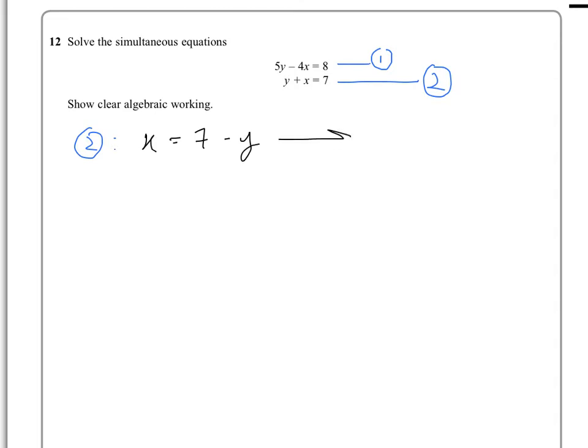and what you do is you substitute that into 1. So since x is 7 minus y if we put that into equation number 1, we get 5y minus 4 times 7 minus y so we replace the x with a 7 minus y and that equals 8.